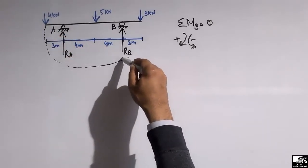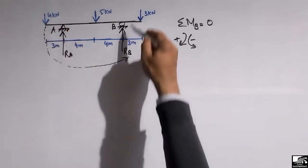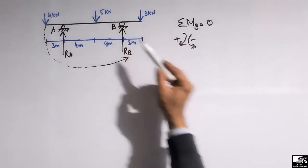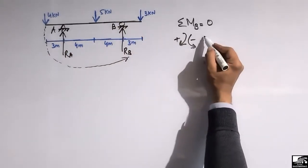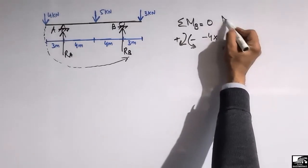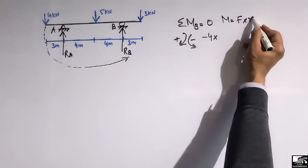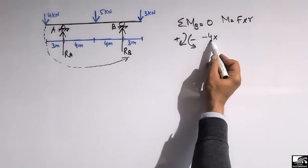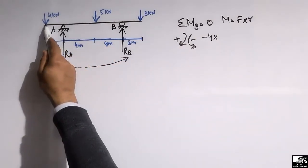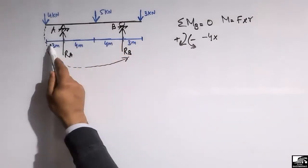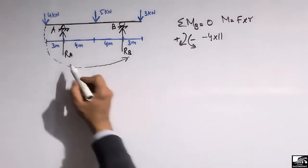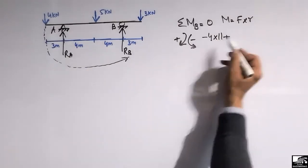Since the 4 kN force creates an anti-clockwise moment about point B, it is negative. So it will be minus 4 multiplied by its moment arm, because moment equals force times moment arm. The distance from the 4 kN load to point B is 3 + 4 + 4 = 11 meters.